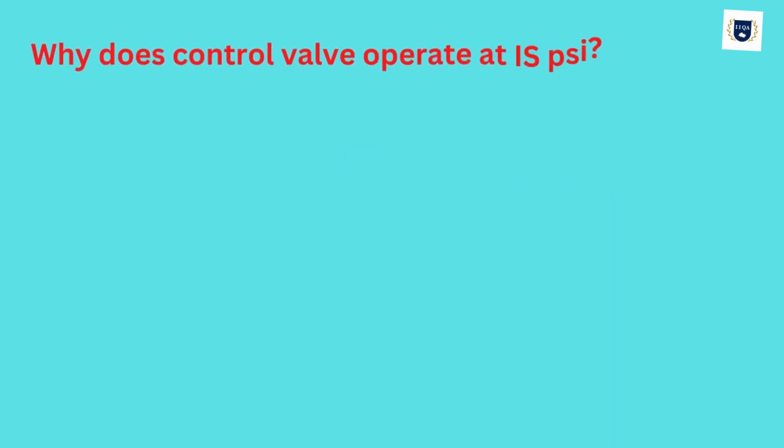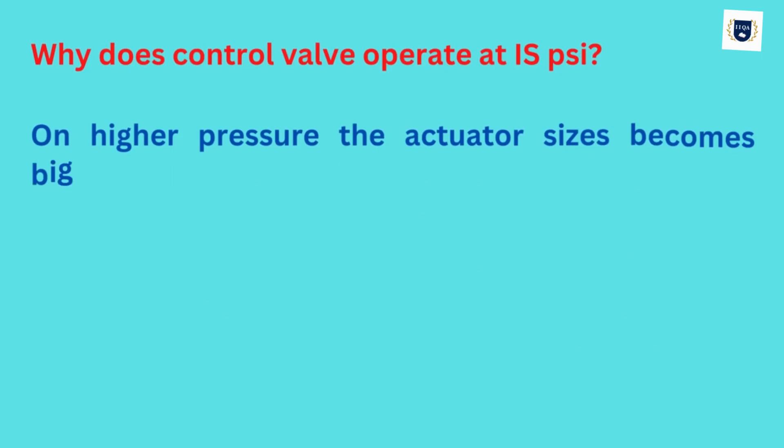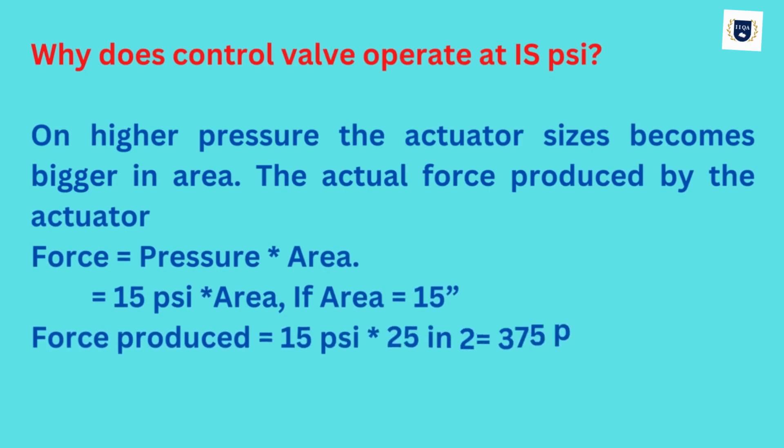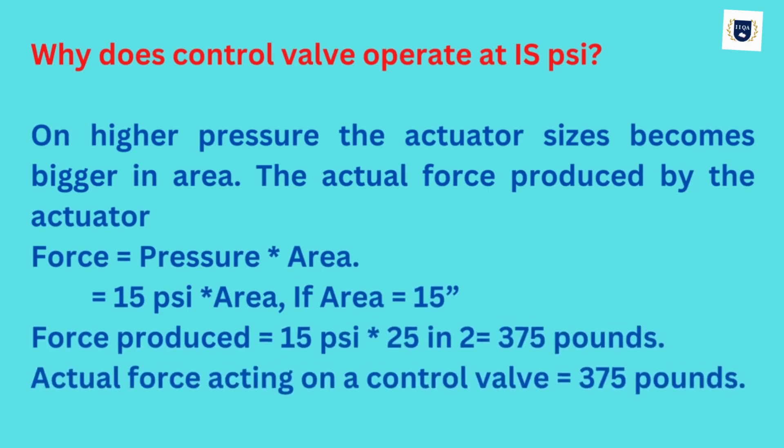Why does a control valve operate at 15 psi? On higher pressure, the actuator size becomes bigger in area. The actual force produced by the actuator: Force = Pressure * Area, which equals 15 psi * Area.